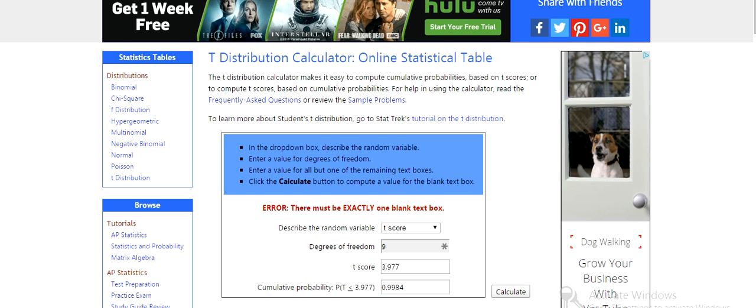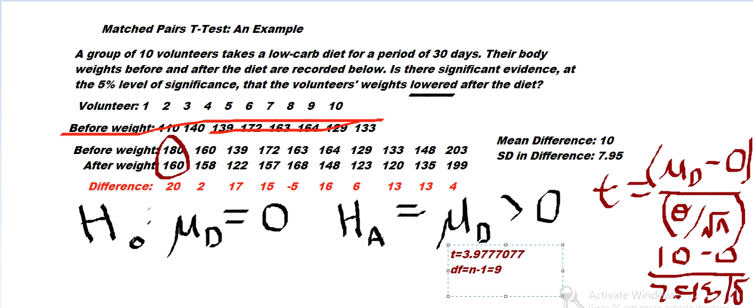Good. We calculated and got 0.9984 for the, so the p-value is 0.9984, or actually since we're doing a greater than test, we're going to take one minus that, and that's 0.0016.